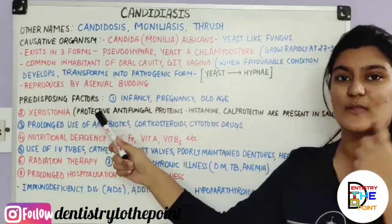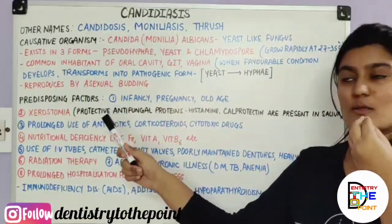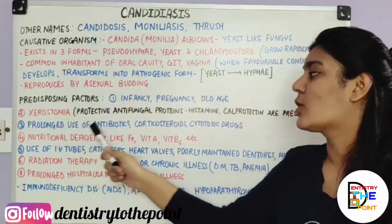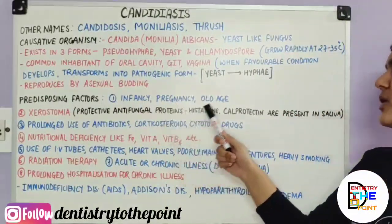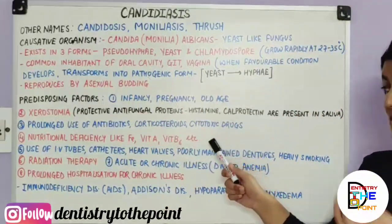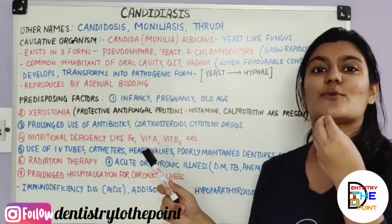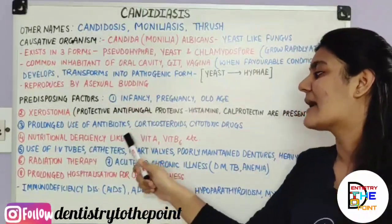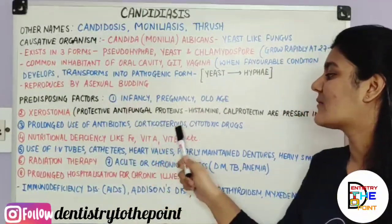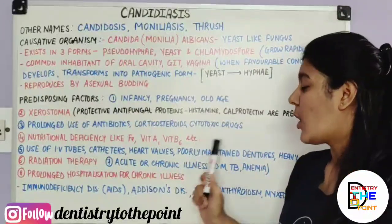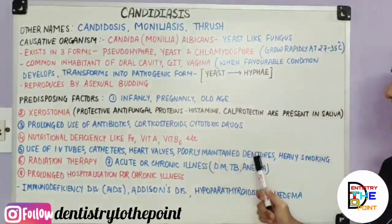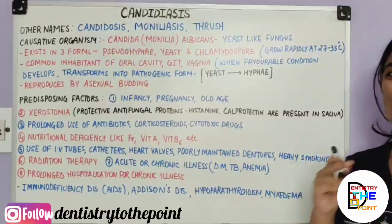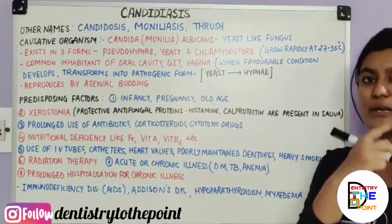Other mouth-related predisposing factors include: prolonged use of antibiotics, corticosteroids, and cytotoxic drugs taken through the mouth. Nutritional deficiency — such as iron, vitamin A, vitamin B6 — also plays a role. Additionally, poorly maintained dentures and heavy smoking are predisposing factors. So these are all mouth-related contributing factors.